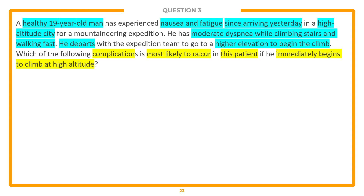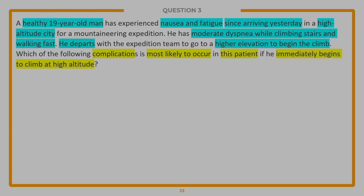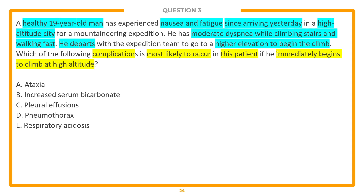So the lead-in is asking about the complication most likely to occur if he immediately begins to climb at high altitude. I think this is most likely a two-step question: one, we've got to figure out what is going on and what the condition is; and two, what is a complication if this persists or he continues to climb. Let's take a look at those answer choices, starting at the bottom and working our way up. Answer choice E: respiratory acidosis. D: pneumothorax. C: pleural effusions. B: increased serum bicarbonate. And A: ataxia.